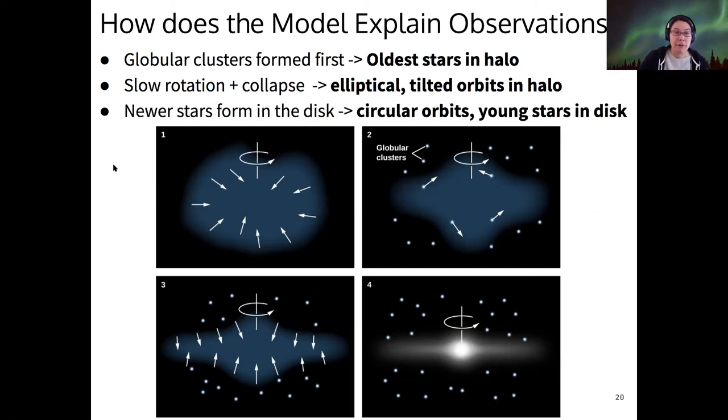And then finally, it explains why most of the matter is in the disk because of the rotational flattening, first of all, and it explained why the disk stars have circular orbits because they were born in the disk, which was already orbiting where the gas was already orbiting the center of the galaxy in a circular motion. And so the disk stars inherit the rotational properties of the gas that they were born from in the disk.